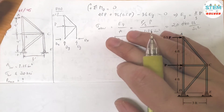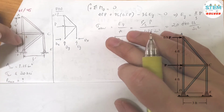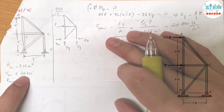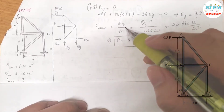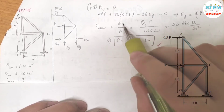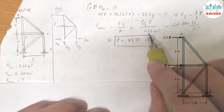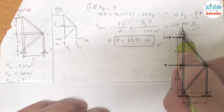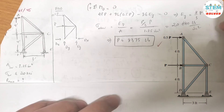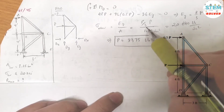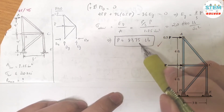The allowable stress in each rod is not to exceed 20 KSI. Normal stress equals normal force divided by area. The normal force EY equals (4/3)P divided by the area, and every member has the same area of 1.25 square inches. Setting this equal to 20,000 pounds per square inch and solving for P gives P = 9,375 pounds.